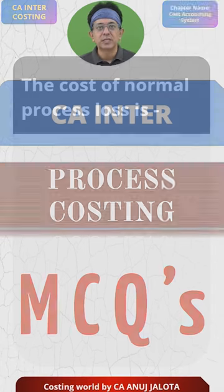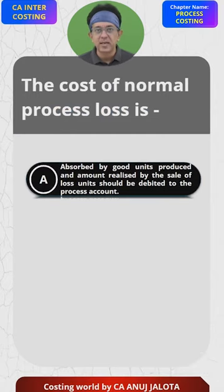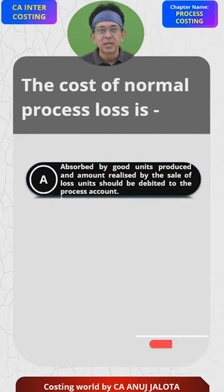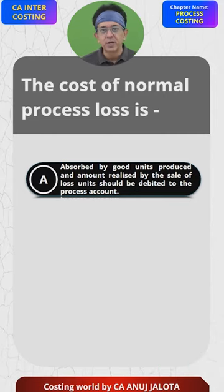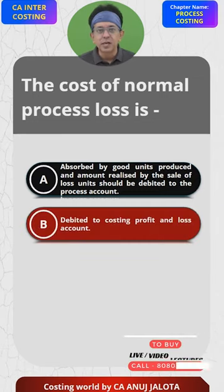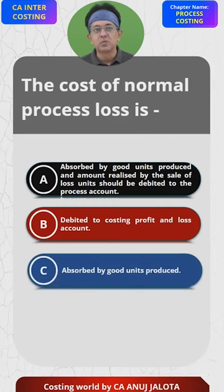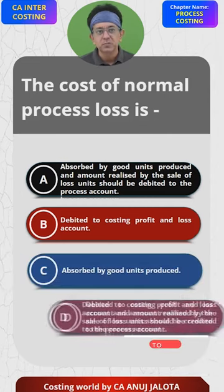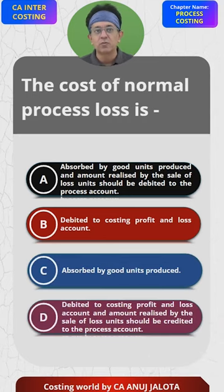CA Inter Process Costing MCQs. The cost of normal process loss is absorbed by good units produced and amount realized by the sale of loss units should be debited to the process account — that is option A. Option B: Debited to Costing Profit and Loss Account. Option C: Absorbed by Good Units Produced. Option D: Debited to Costing Profit and Loss Account and amount realized by the sale of loss units should be credited to the process account.